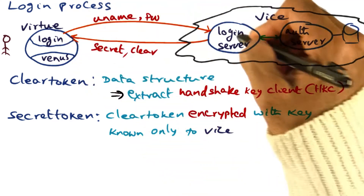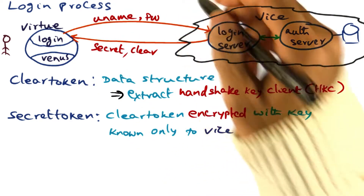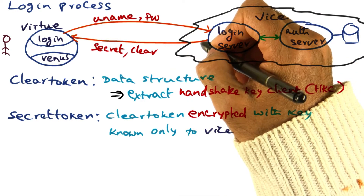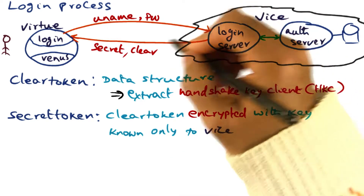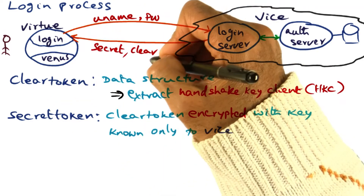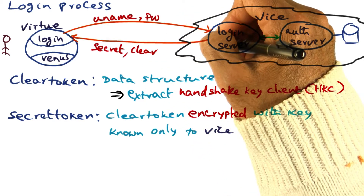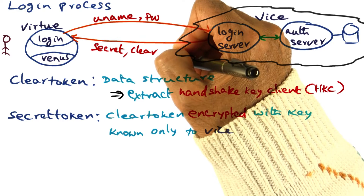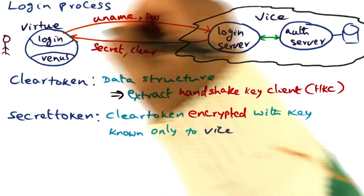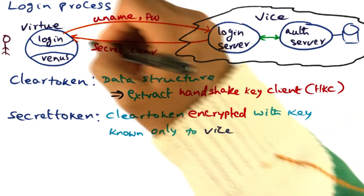First, the login process communicates securely with the login server, presenting the username and password. The login server then returns two tokens: one is called a secret token, the other is called a clear token. The clear token is a data structure. Both the secret and clear tokens are communicated back to the login process by the login server in a secure manner over the insecure links.